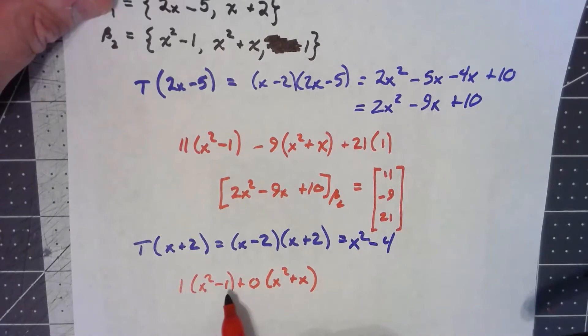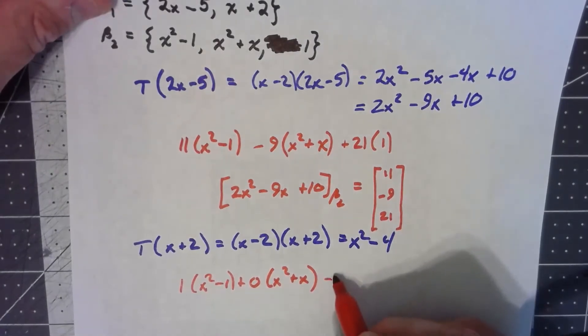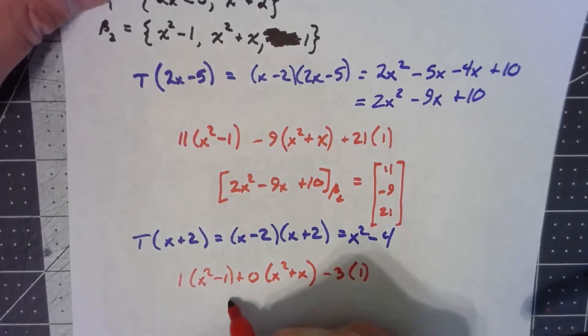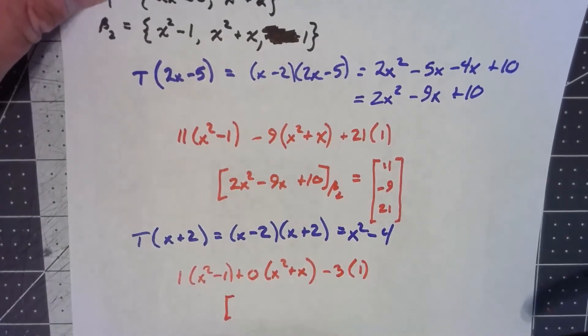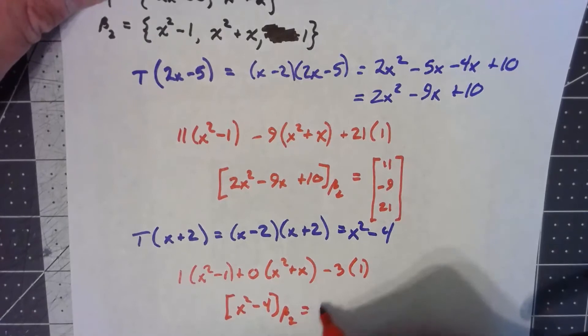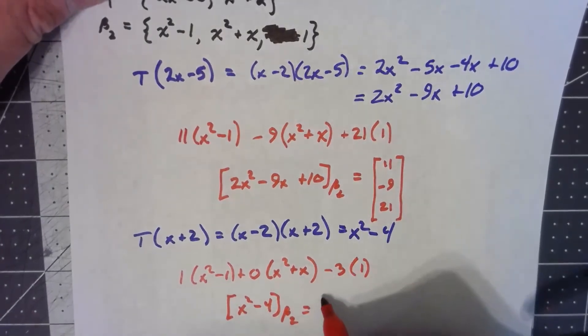So far I've got negative 1, but I need negative 4, so I need negative 3 times 1. So my coordinate vector for x squared minus 4 with respect to beta 2 is 1, 0, negative 3.